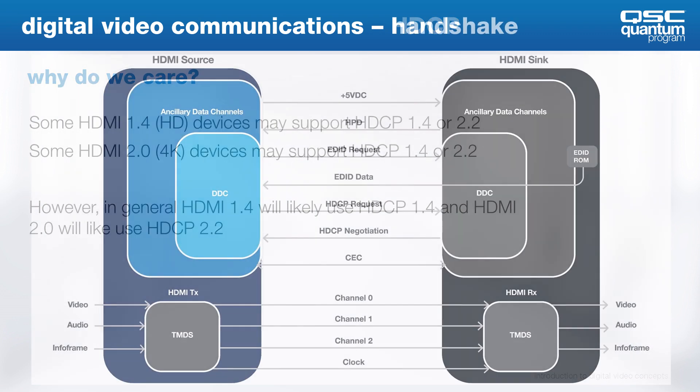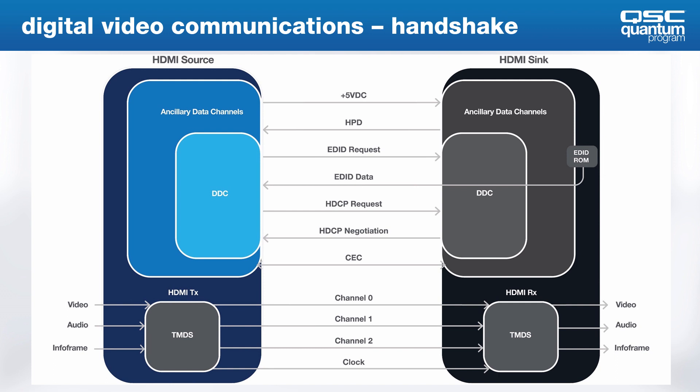Hey, remember this slide? Well, it's back. Let's recall that the source will send +5V, the sync will respond to the HPD event, the source requests the EDID, and the EDID is sent to the source. Then HDCP is negotiated, and the video data is sent, encrypted or unencrypted. CEC is not necessarily part of the handshake or hot plug process, but it is an additional bi-directional ancillary data channel for device control over HDMI.